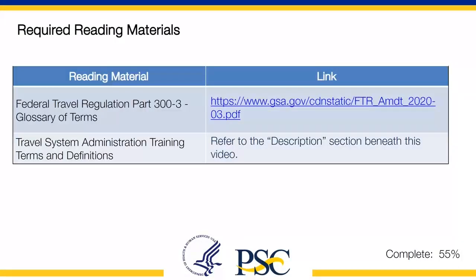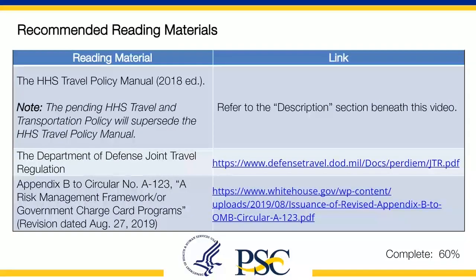Required reading materials include the following: Federal Travel Regulation Part 300-3, Glossary of Terms; and the Travel System Administration training terms and definitions. Recommended reading materials include: the HHS Travel Policy Manual, 2018 Edition. Note: the pending HHS Travel and Transportation Policy will supersede the HHS Travel Policy Manual. Also recommended: the Department of Defense Joint Travel Regulation.